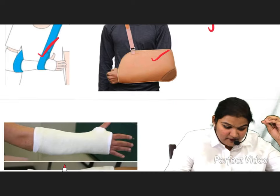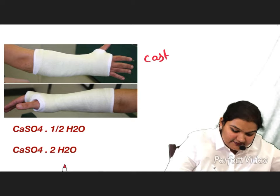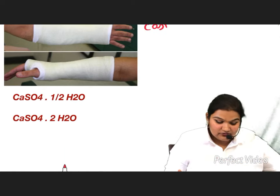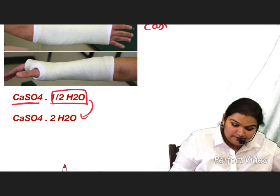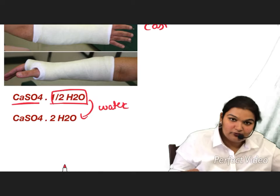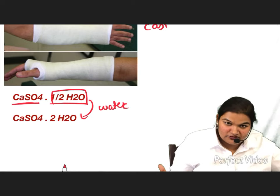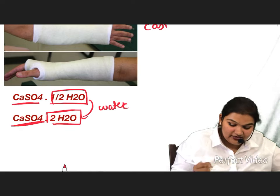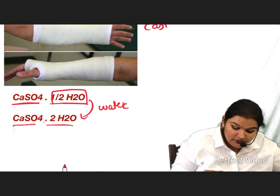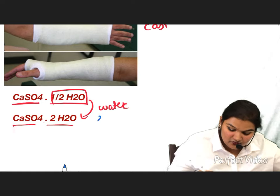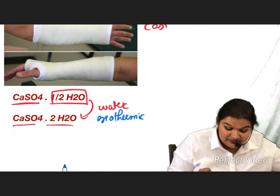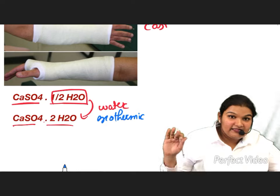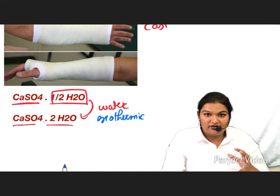Cast immobilization uses plaster of paris — a gypsum salt. The formula of gypsum salt is CaSO₄·½H₂O. When water is added, two water molecules attach to it, giving the formula CaSO₄·2H₂O. This reaction is exothermic — it liberates heat. When the plaster of paris is applied on bandage, it hardens as it cools down.